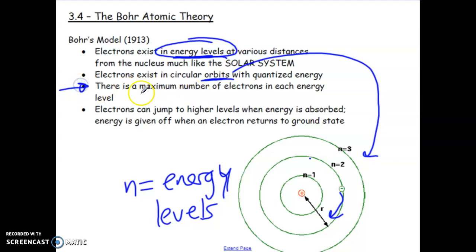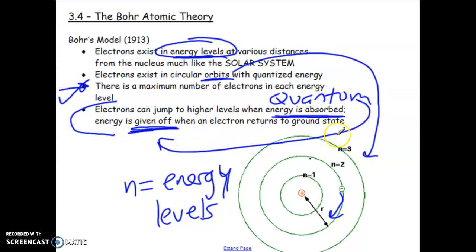So there's a couple of things that are true. So he believed that there was a maximum number of electrons that could fit in each energy level. And of course, check this out. Electrons can jump to higher levels when energy is absorbed. We know that that is a quantum of energy and energy is given off. The same quantum of energy is given off when the electron returns back to the ground state. So remember that when it's absorbed, that's called the excited state.